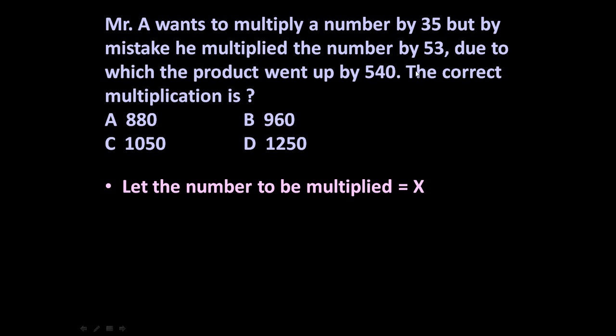He wants to multiply x by 35, but he multiplied with 53. So the equation becomes 53x minus 35x, because he wants to multiply by 35,